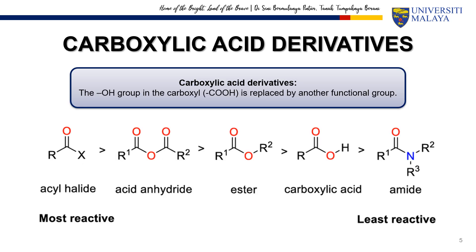Now, what is a carboxylic acid derivative? It is any compound formed when the OH group in the COOH functional group is replaced by another atom — for example, a halide to form acyl halide, or an alkyl group to form an ester. But what about aldehydes and ketones? They also contain C=O, but they replace the OH group with H for aldehydes. They are not carboxylic acid derivatives because they don't come from carboxylic acid by simply swapping the OH group — they are formed through a different pathway.